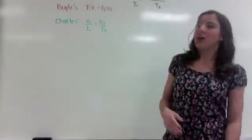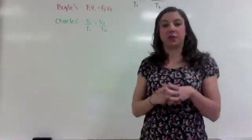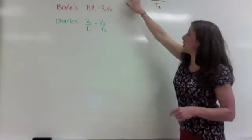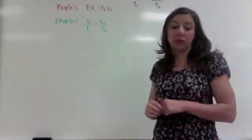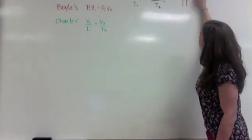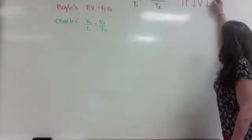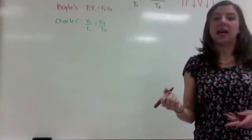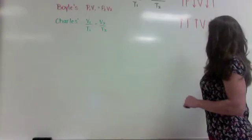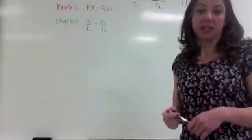The third law is the Combined Gas Law, which does exactly what it says — it combines Boyle's Law and Charles' Law into one formula: P1V1/T1 = P2V2/T2. The trends are: just like Boyle's Law, as pressure increases, volume decreases. If volume goes down, temperature also goes down. Conversely, if temperature goes up, volume goes up, which causes pressure to go down. We're going to put it all together in an example.